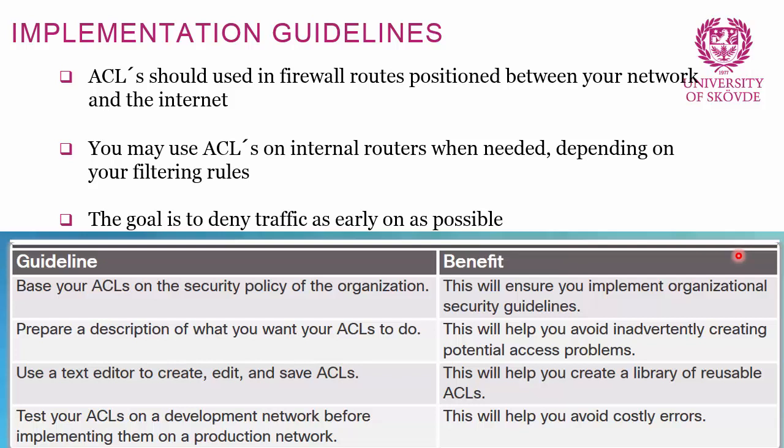The main rule is to use ACLs on firewalls positioned between your network and the internet. You want to block denied traffic as early as possible — ideally before it even enters your network. Depending on your filtering rules you may also have internal filtering, for instance preventing the student network from accessing the staff network, in which case you use ACLs on internal routers.